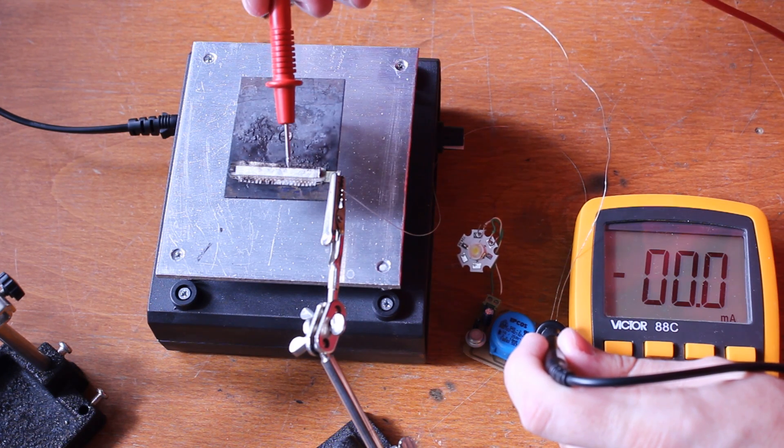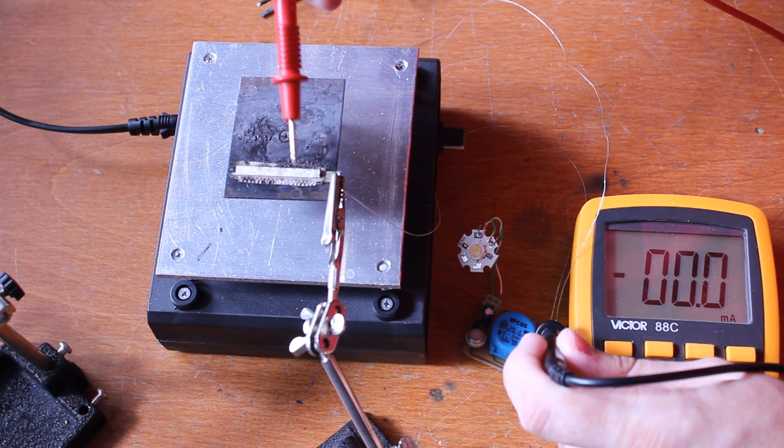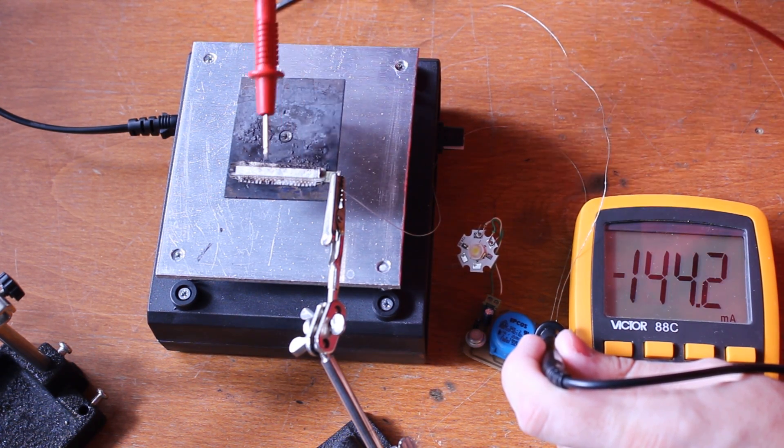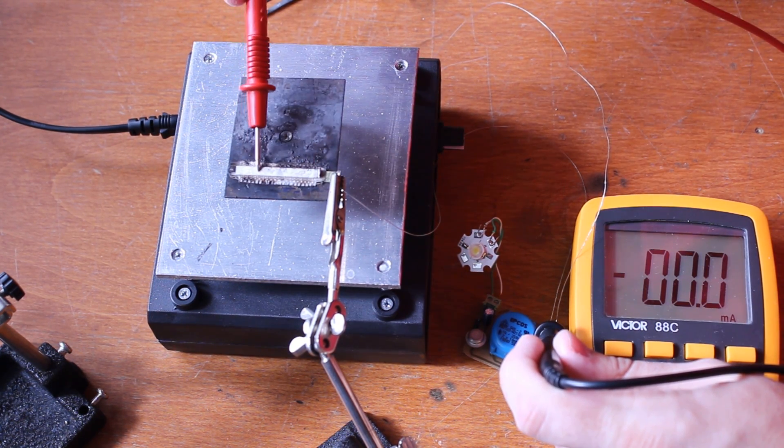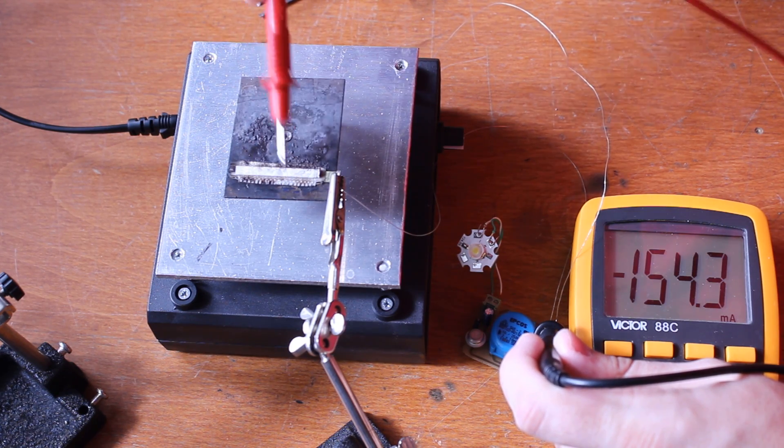But still, 160-150 milliamps out of what is essentially a tiny coin cell is quite impressive, if not exactly extraordinary.